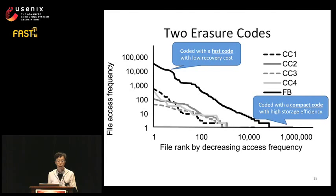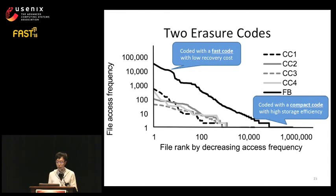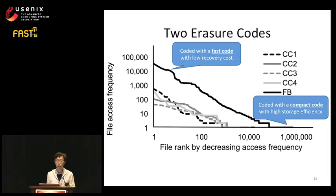Motivated by this access skew, in this work we propose to use two erasure codes instead of one. We use a fast erasure code to encode hot files, providing low recovery cost. We also use a compact code to encode the majority of cold data, giving us overall low storage overhead. With the observed access skew, we expect to get the best of both codes.